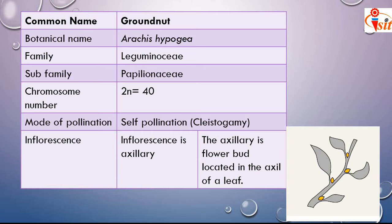The chromosome number of groundnut is 2n equal to 40. The mode of pollination in groundnut is self-pollination due to the cleistogamic condition. In cleistogamic condition, the flower bud in which pollination and fertilization takes place in the closed condition of the flower is called a cleistogamous flower, and groundnut is self-pollinated due to this cleistogamous condition.